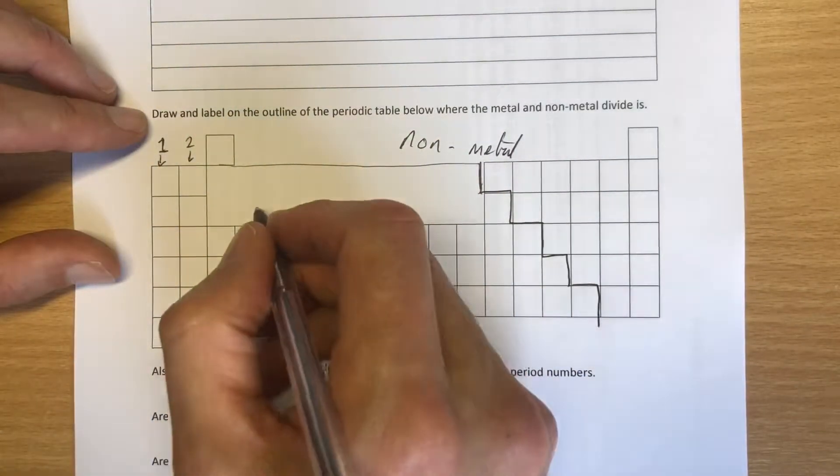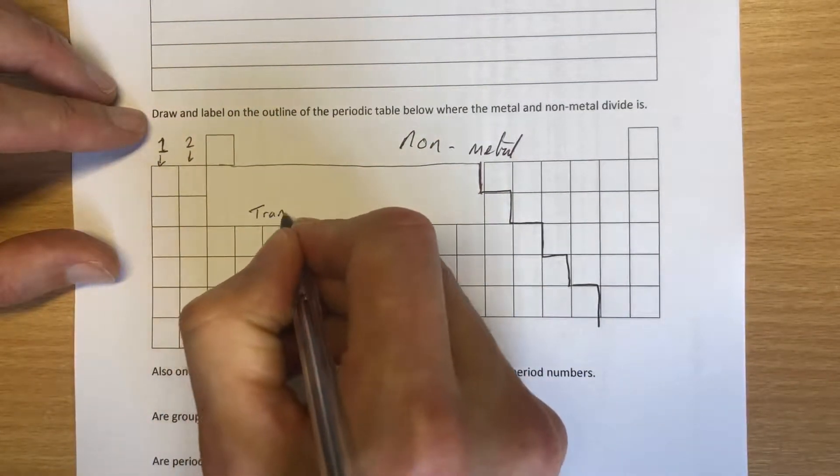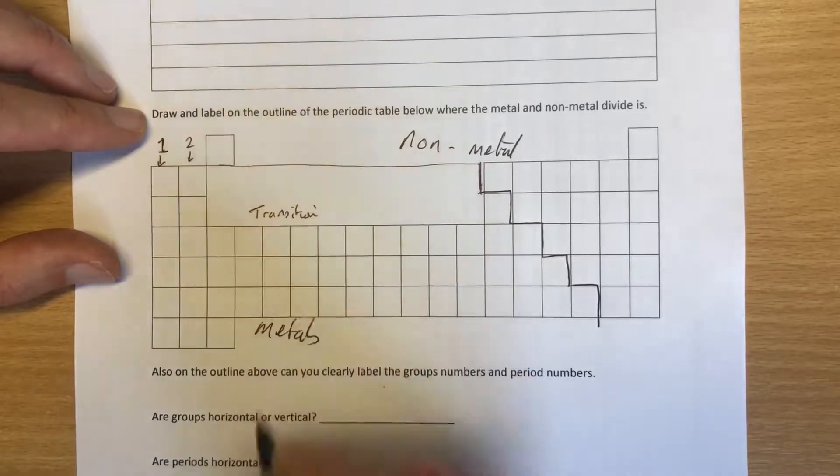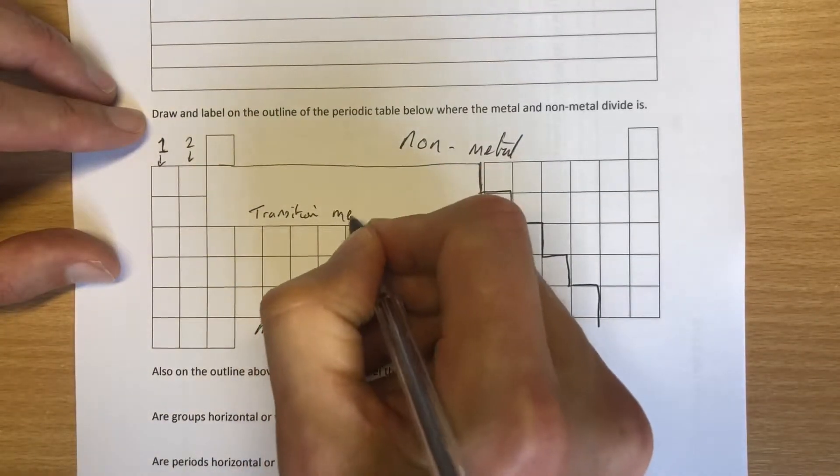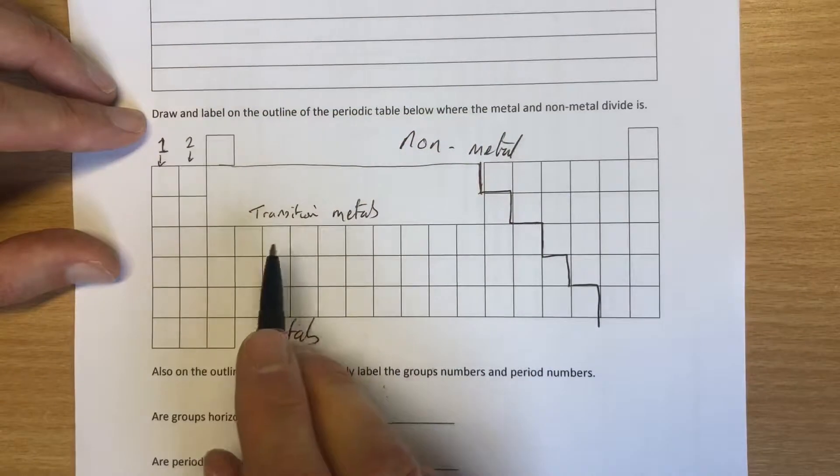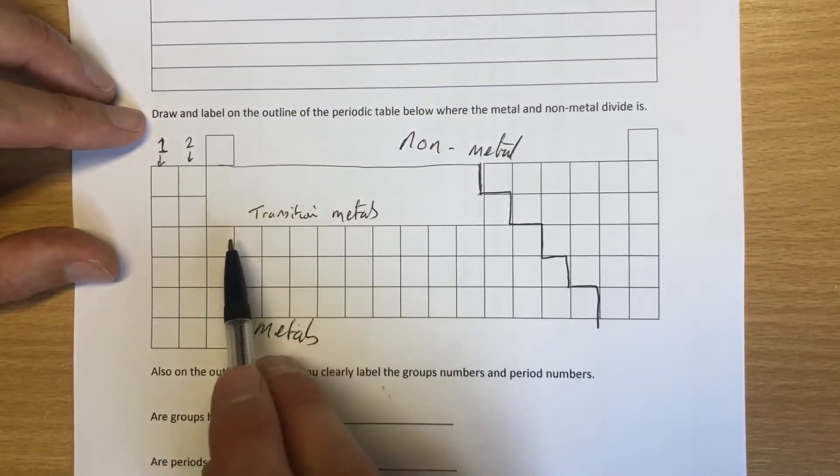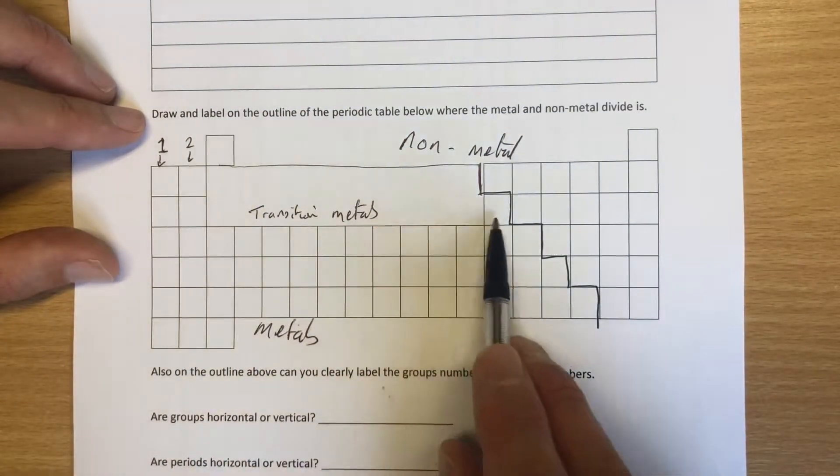This big group in the middle here called the transition metals does not have a number. I know that's not what the question asks, but I'm going to label it anyway. These are the transition metals here. They're the elements in transition, between group two and group three.